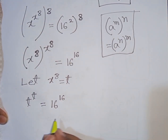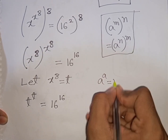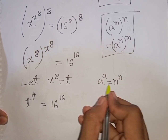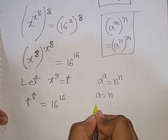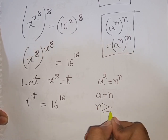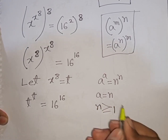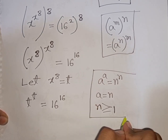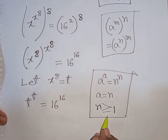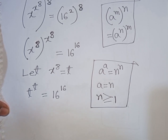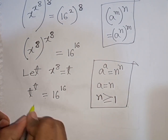Our equation becomes t power t is equal to 16 power 16. You can apply the rule that a power a equals n power n, so a will be equal to n where n is greater than or equal to 1. According to this rule, we compare here: t will be equal to 16.